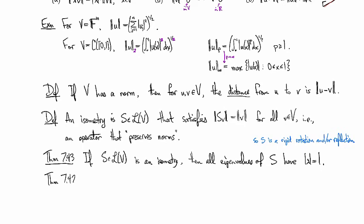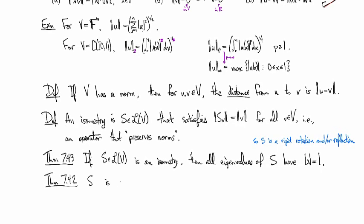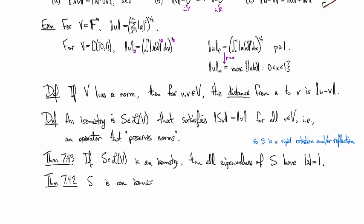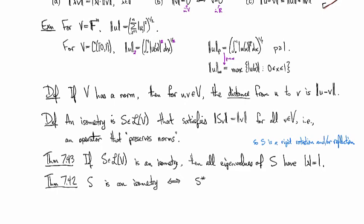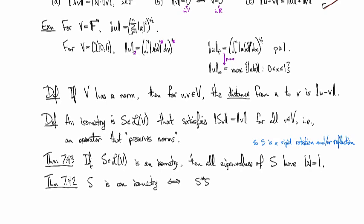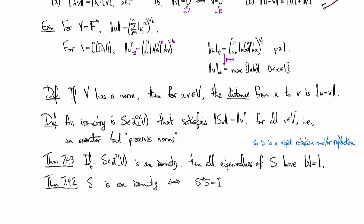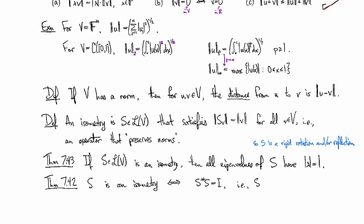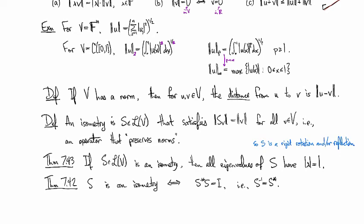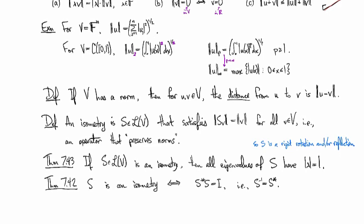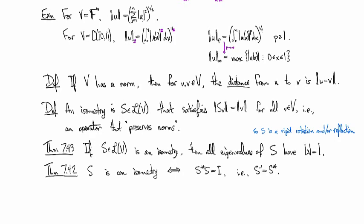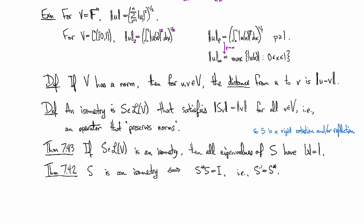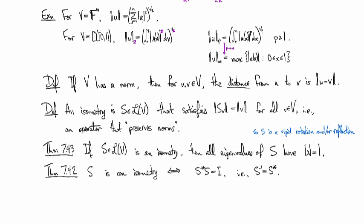One other result that we'll need is that S is an isometry if and only if S adjoint S is equal to the identity, or in other words S inverse is equal to S adjoint. Once upon a time I said it's easy to confuse the inverse with the adjoint because they both go in the opposite direction. The key point here is that if they are equal, it's a very special thing, this kind of rigid no scaling allowed type of situation.